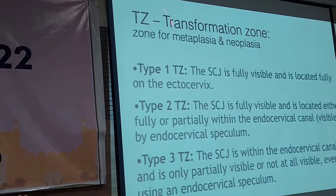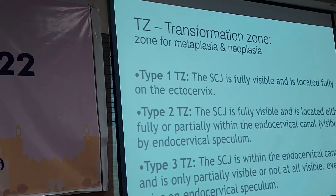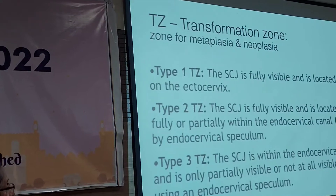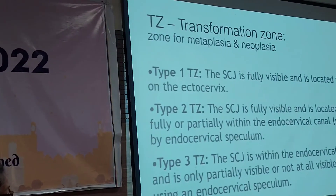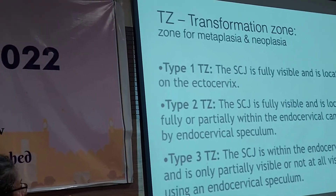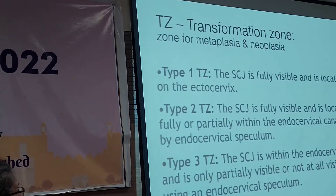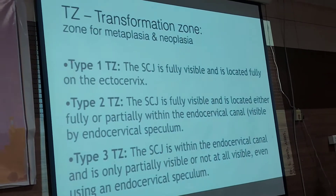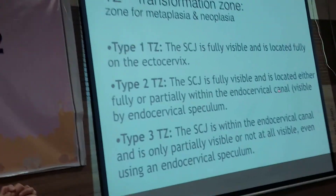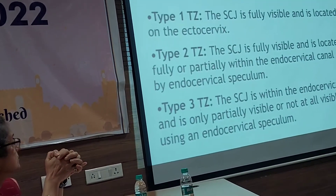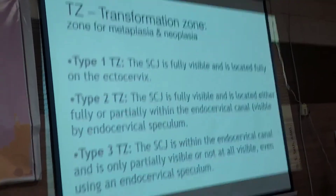Depending on visualization of the transformation zone, it is divided into three categories. Type 1 transformation zone is completely visible on the ectocervix. Type 2 transformation zone is one where part of it has evaginated into the endocervical canal, so it may not be visible initially, but if you open the endocervix with an endocervical speculum, the squamocolumnar junction is partially or fully visualized.